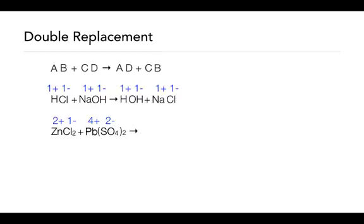In our next reaction, again, we've got our ionic compounds reacting with each other on our reactant side. To predict this, we are simply going to have to look at how these ions trade places. The zinc is going to trade places with lead. So zinc is going to go with the sulfate on the product side, and the lead is going to go with the chloride on the product side.